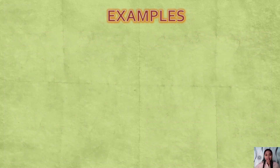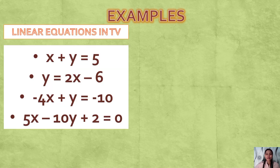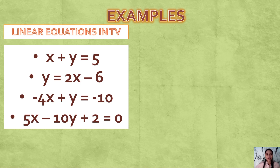Here are examples of linear equations. X + Y = 5 is in standard form. Y = 2X − 6 is in slope-intercept form. −4X + Y = −10 is also in standard form but with a negative coefficient for A. 5X − 10Y + 2 = 0 is in its general form.